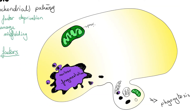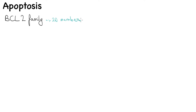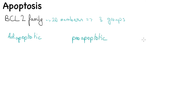Pro-apoptotic molecules or death proteins are released from the mitochondrial intramembranous space into the cytoplasm. Cytochrome c is a well-known death molecule; once in the cytosol, these proteins can induce apoptosis. The release of these death molecules is controlled by the BCL2 family of proteins. More than 20 members of the BCL2 family can be divided into three groups: the anti-apoptotic group, the pro-apoptotic group, and the sensors.